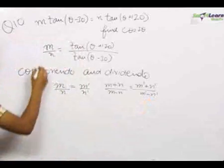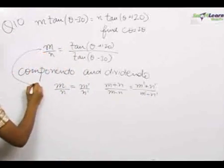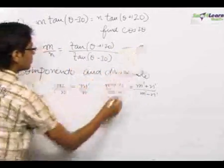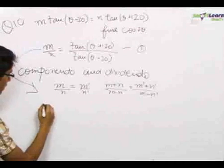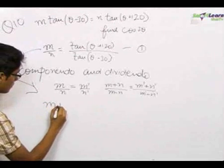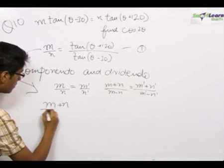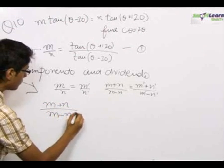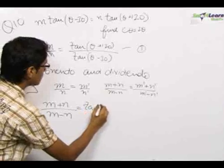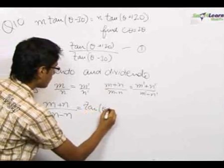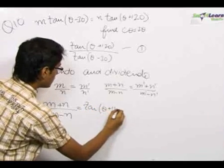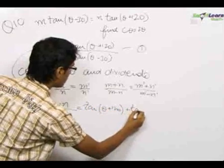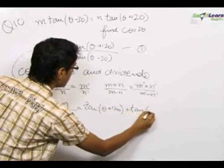Applying componendo-dividendo on this equation, we get m plus n upon m minus n equals tan(θ + 120°) plus tan(θ - 30°) upon tan(θ + 120°) minus tan(θ - 30°).